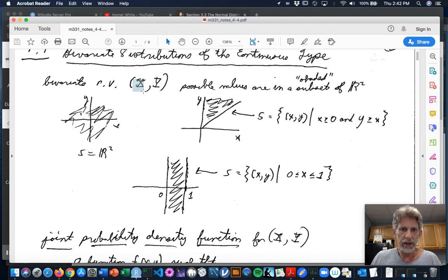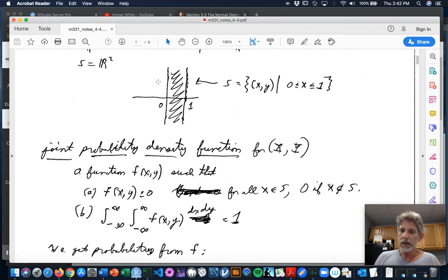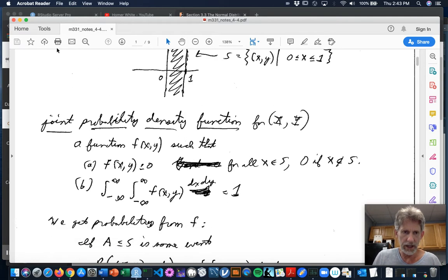So as you might expect, when we get to the marginals, they're going to have continuous type distributions. And so that's why these are called bivariate distributions of the continuous type. So they're not going to have joint probability mass functions. They're going to have joint probability density functions. And such a density function would be a function little f of XY on R2. And it has to have the property that it's bigger than or equal to 0 for all X in the sample space.